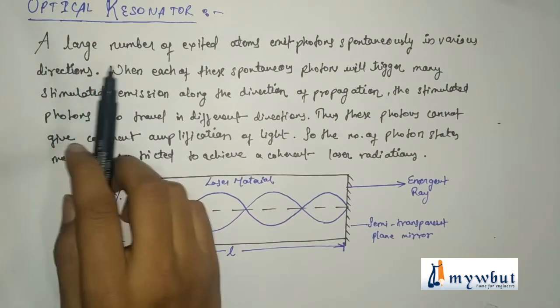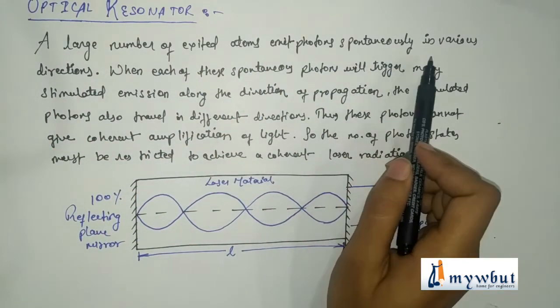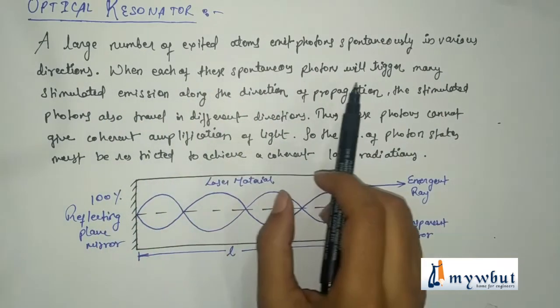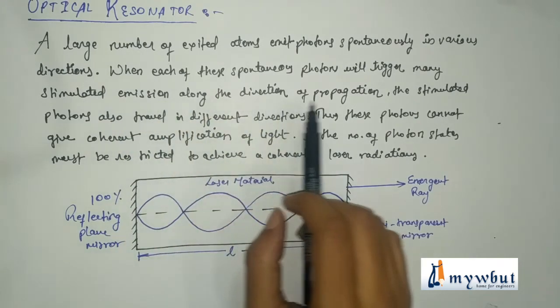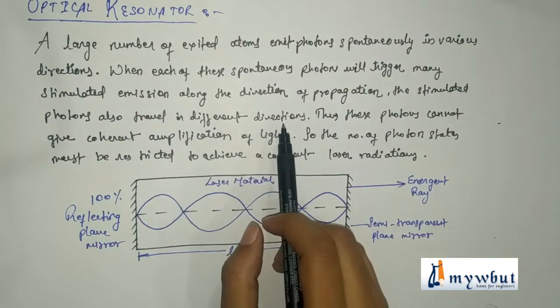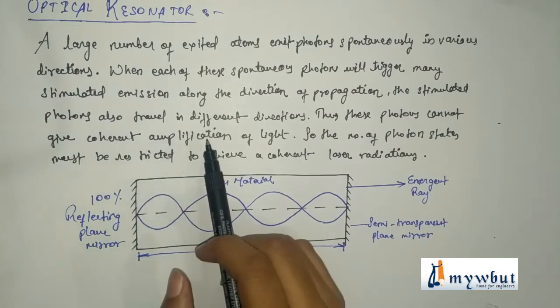A large number of excited atoms emit photons spontaneously in various directions. When each of these spontaneous photons will trigger many stimulated emissions along the direction of propagation, the stimulated photons also travel in different directions. Thus, these photons cannot give coherent amplification.